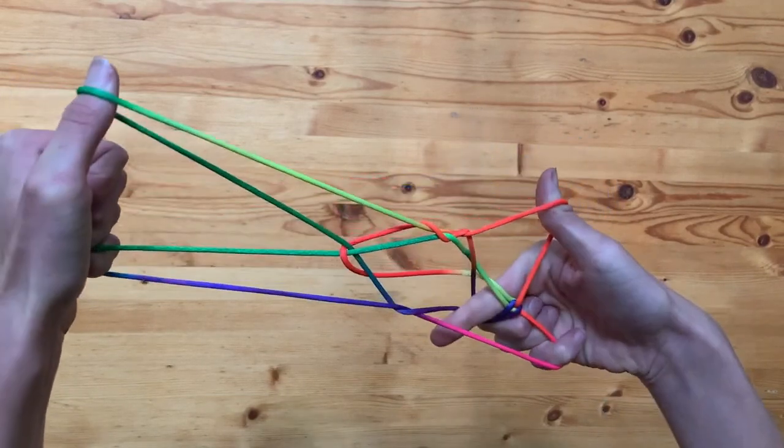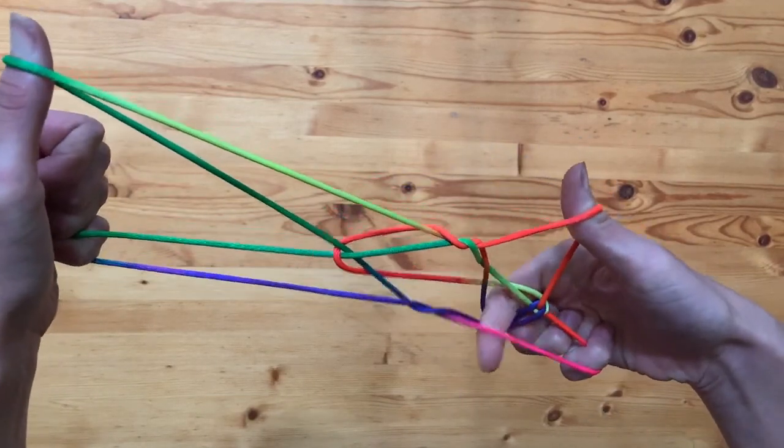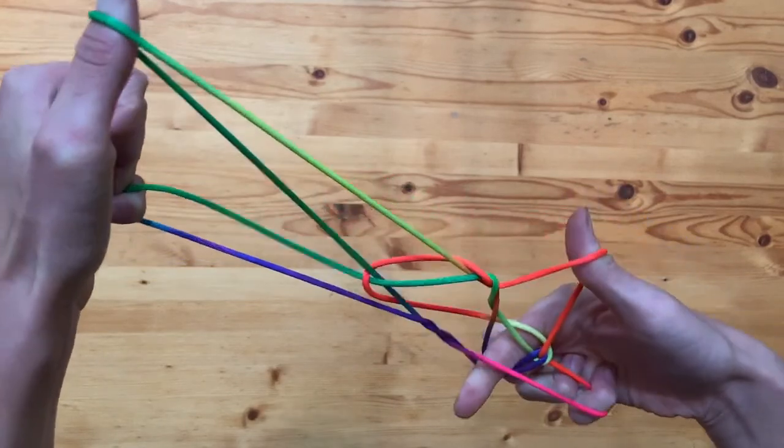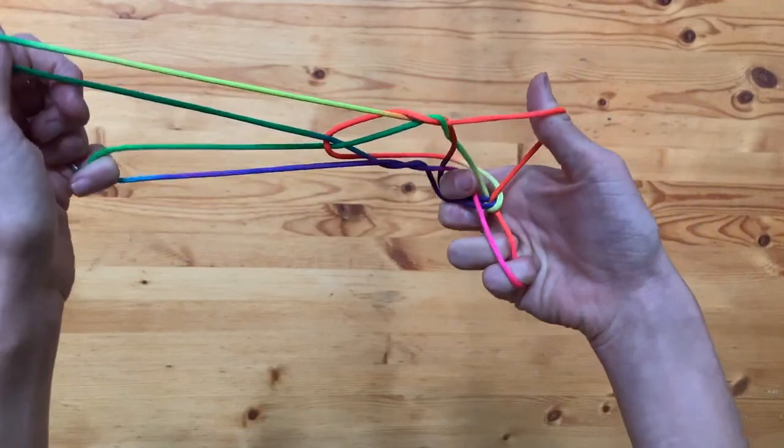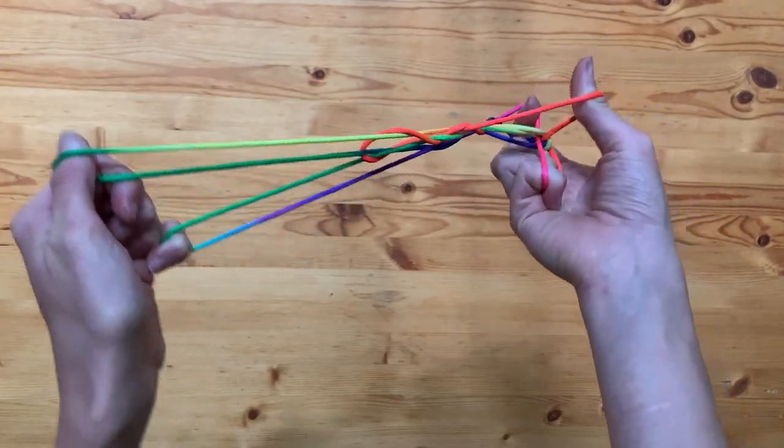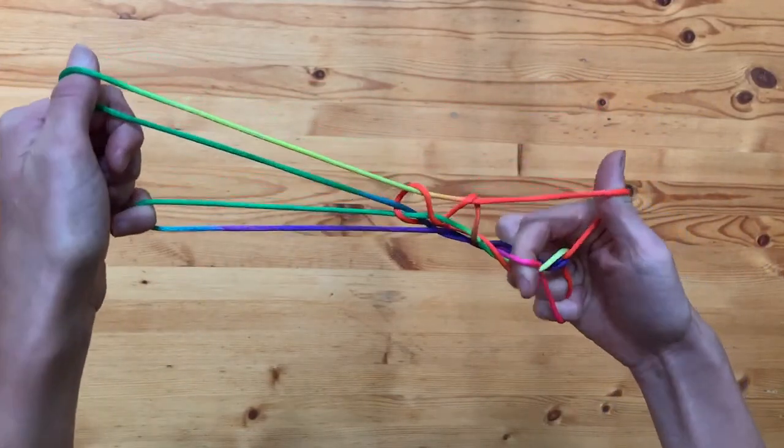And hook this bottom loop and pull it through all of those strings. So you can use your other hand or you can just kind of tighten it so that you pull it all the way through.